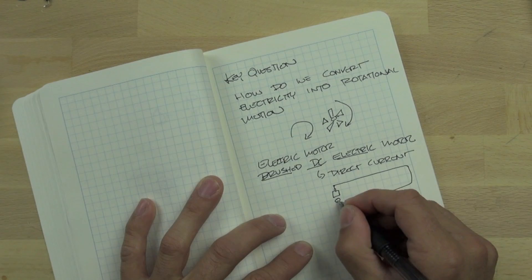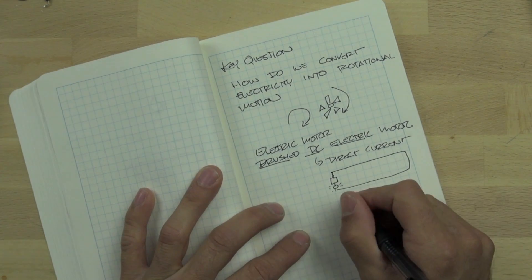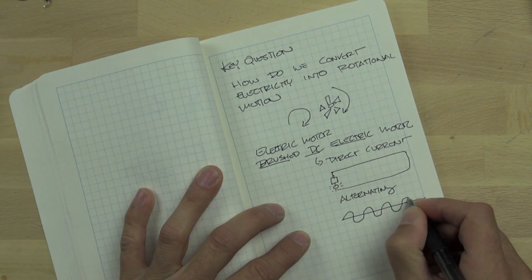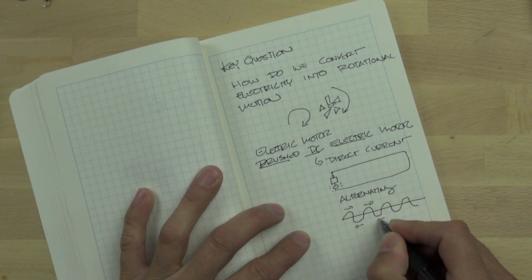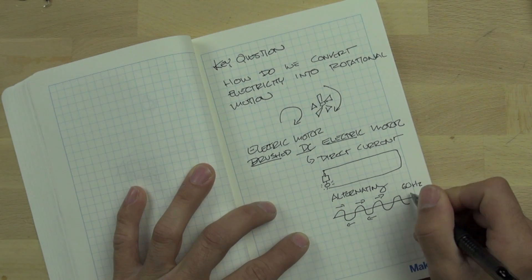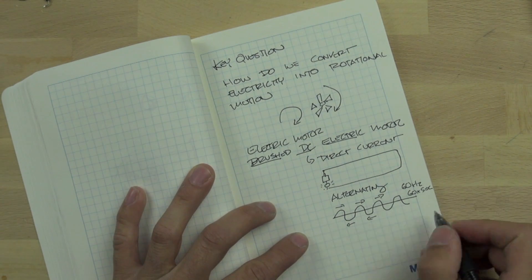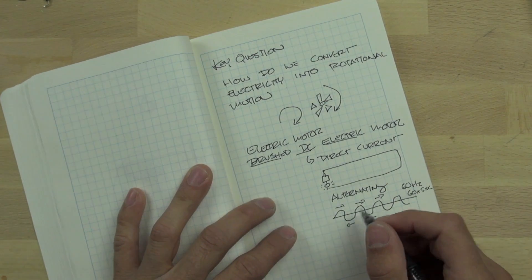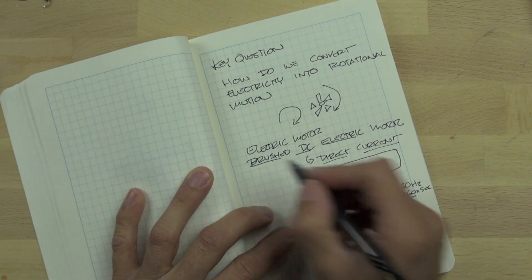And we have a circuit here. You can see that direct current flows in a continuous loop. Alternating current flows in a sine wave and it goes back and forth at 60 Hz or 60 times a second. So our DC motor will use direct current.